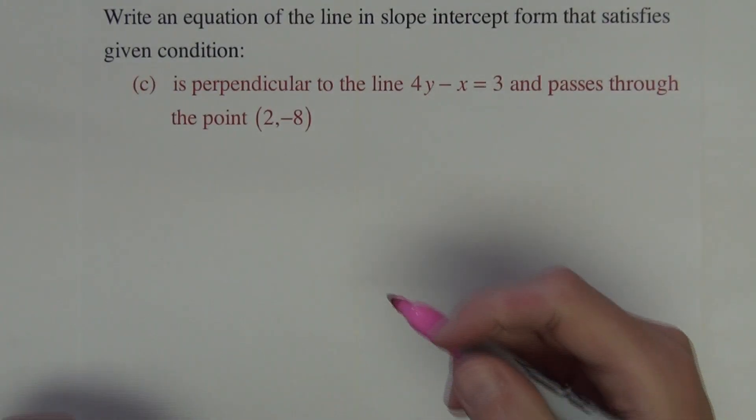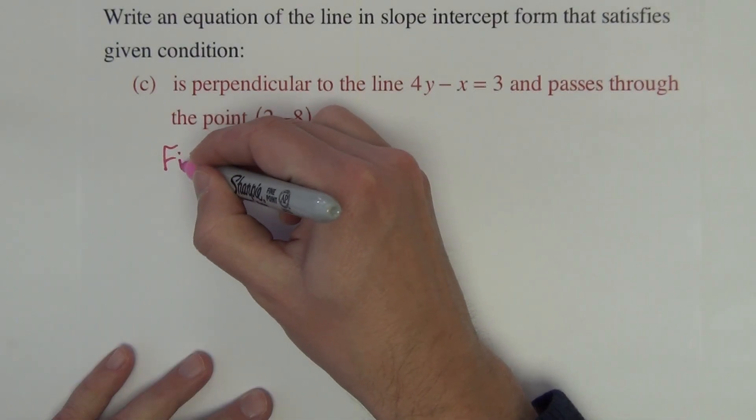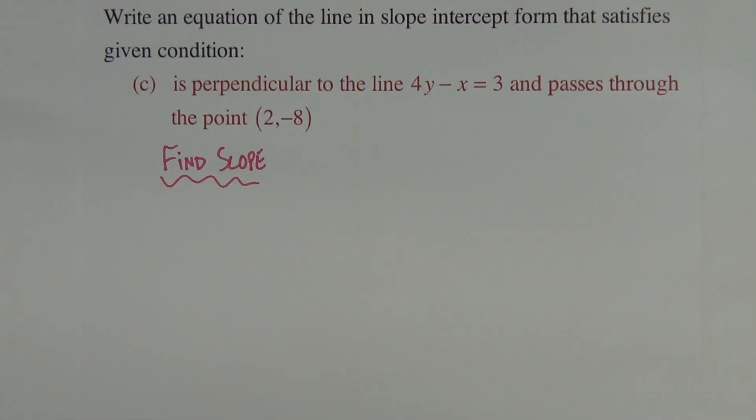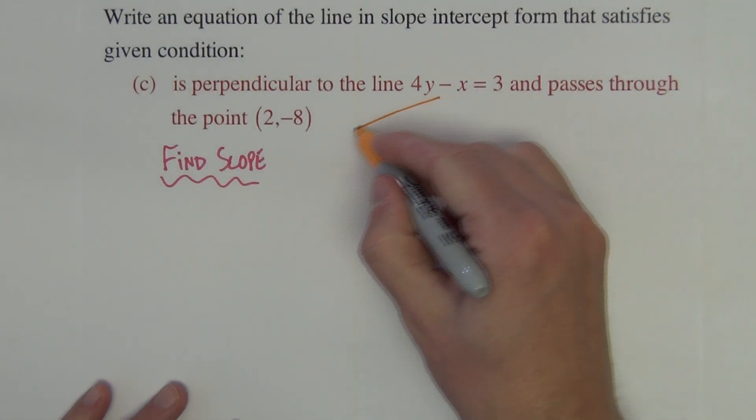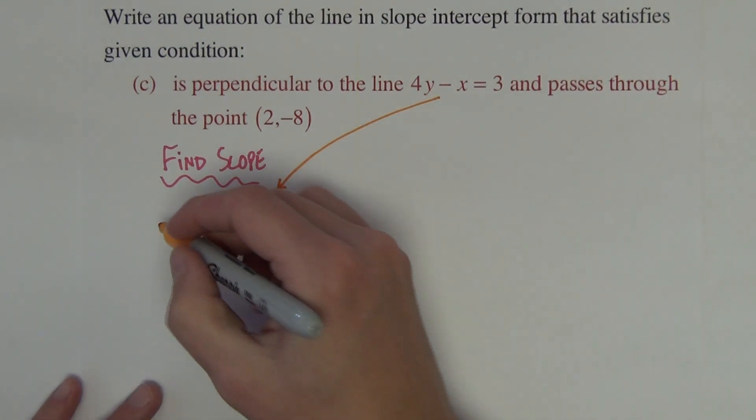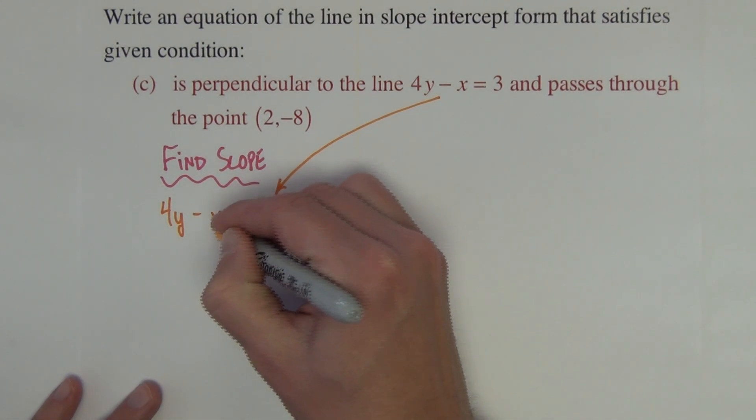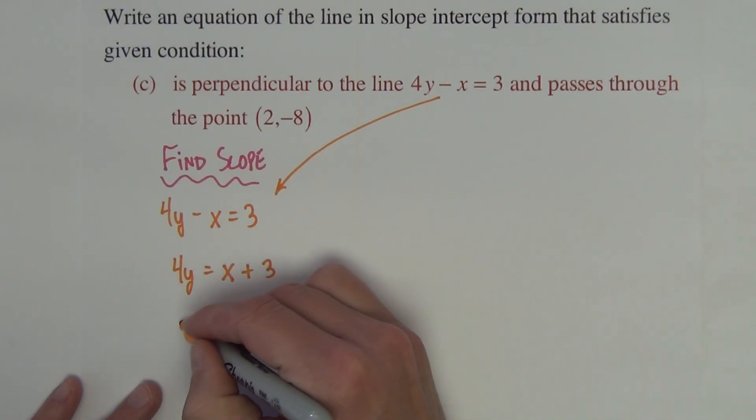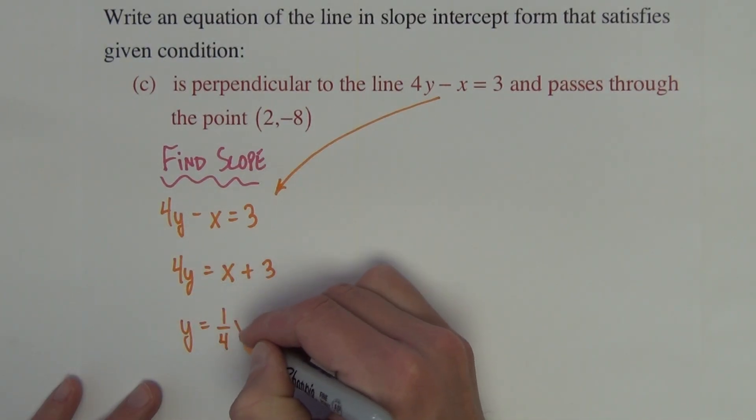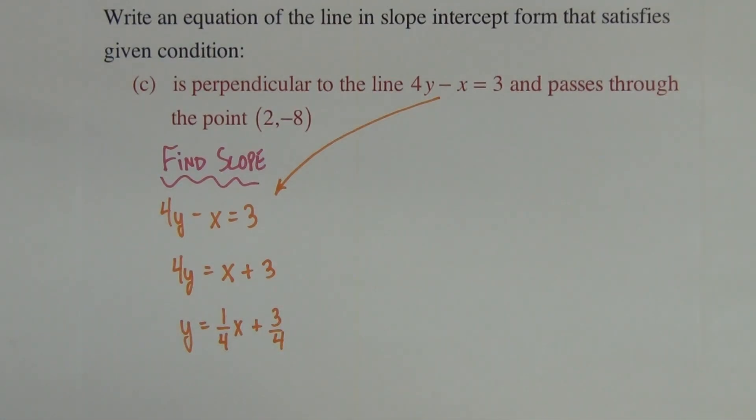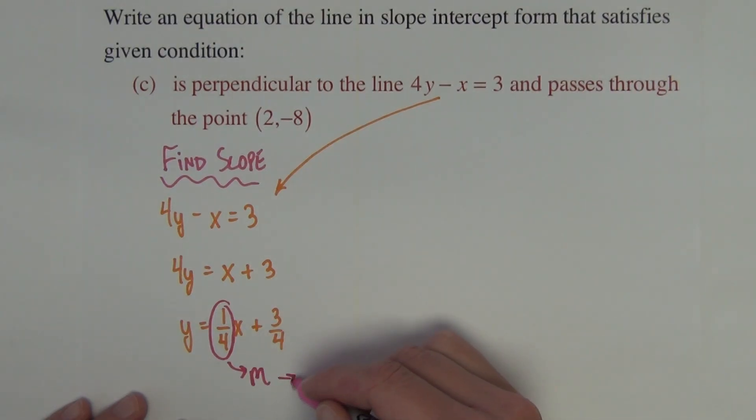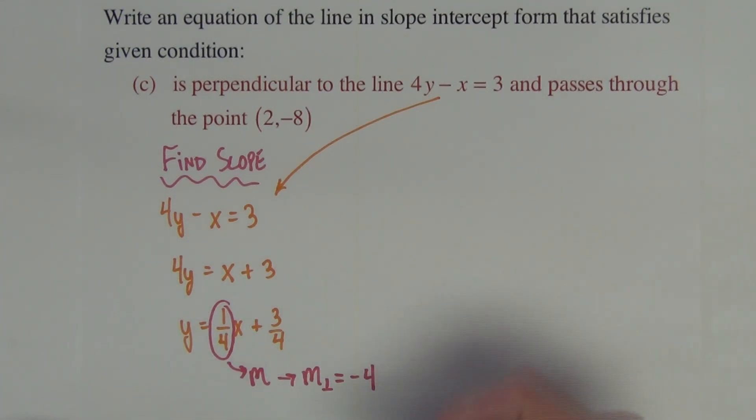Last problem has the same directions. We again begin by finding the slope using this line. We're going to solve that line for y. 4y minus x equals 3 is the same as 4y equals x plus 3, which is the same as y equals 1 fourth x plus 3 fourths. So this number is our slope. We want perpendicular slope, so we're going to use negative 4 over 1, or negative 4.